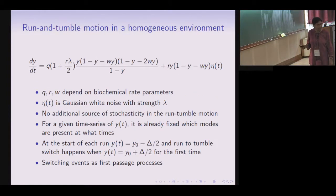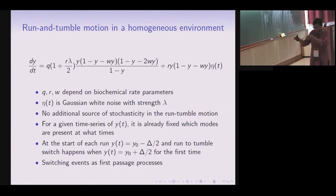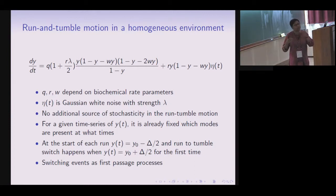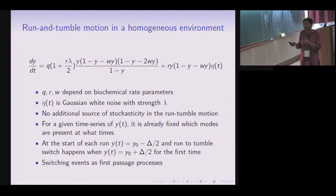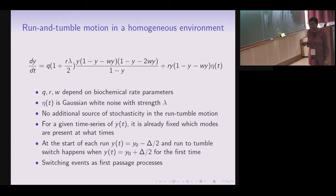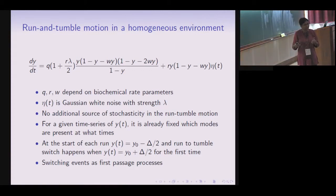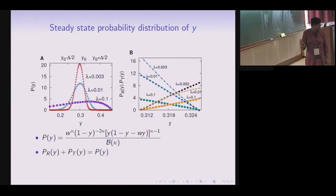The time evolution equation for the signal y involves a Gaussian white noise of strength lambda, derived from the biochemical pathway inside the cell. Since switching probability takes only values 0 and 1, there is no additional source of stochasticity in the run-tumble motion — for a given time series y(t) it is already fixed when the cell runs and when it tumbles. This means switching events are like first-passage processes in signal space: a run begins when y equals y₀ minus delta/2, and ends the first time y reaches y₀ plus delta/2.